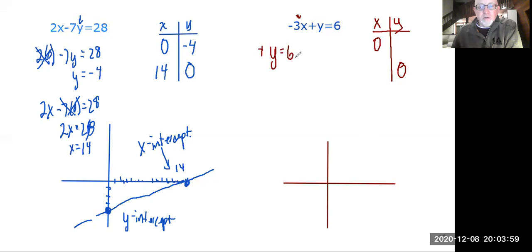So when x equals zero, y equals six, that's the y intercept. One, two, three, four, five, six.